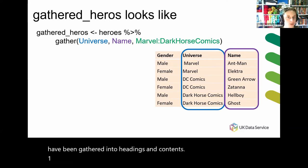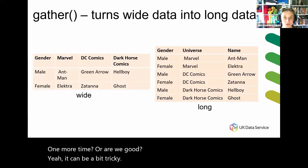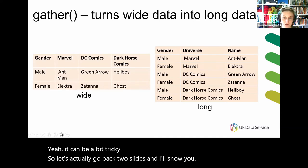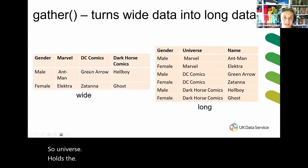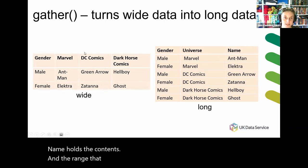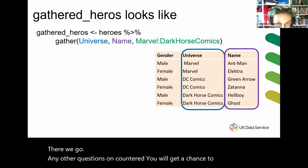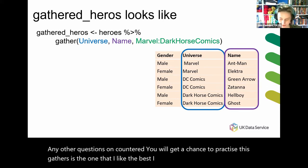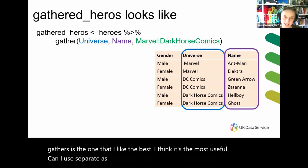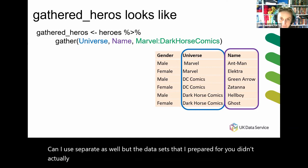One more time, or are we good? It can be a bit tricky. Let's go back to the slides. So 'universe' holds the headings, 'name' holds the contents, and the range specified was this column through to this column. Any other questions on gather? You will get a chance to practice this. Gather is the one I like best — I think it's the most useful. I use separate as well, but the data sets I've prepared didn't actually need spread as much.